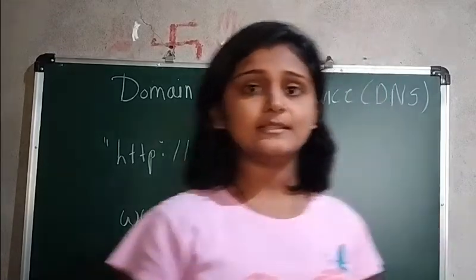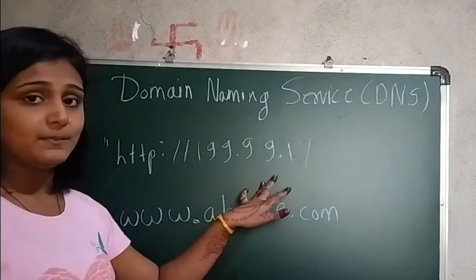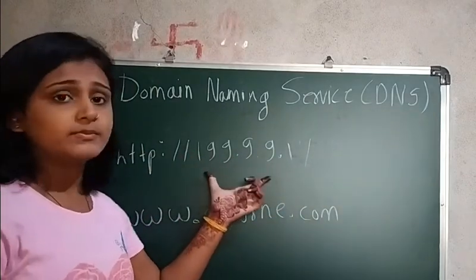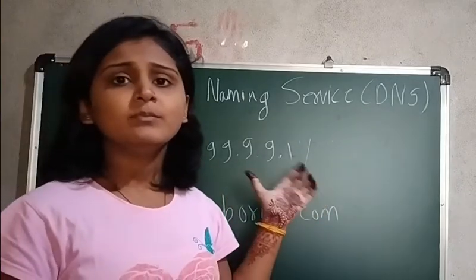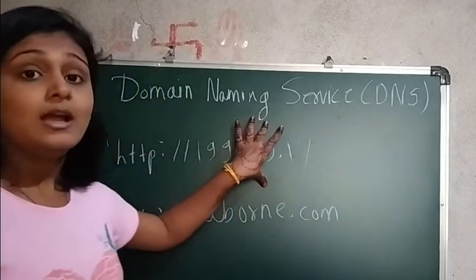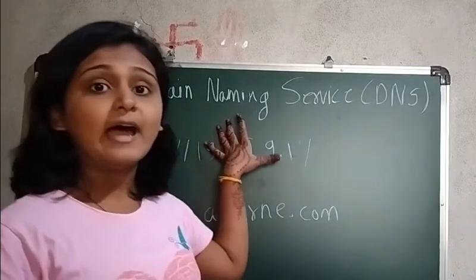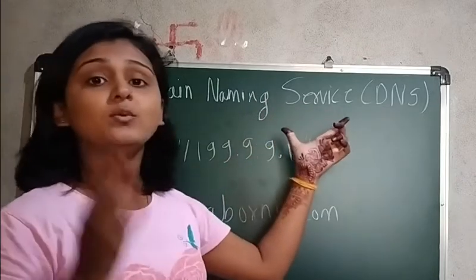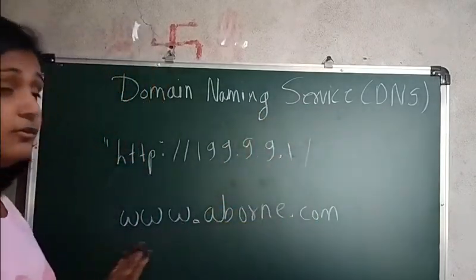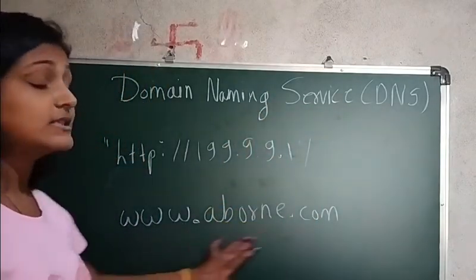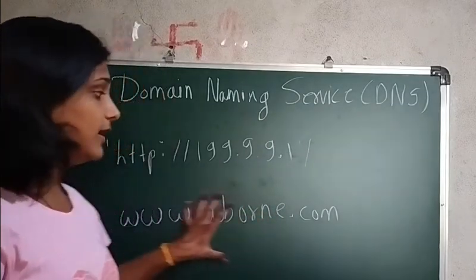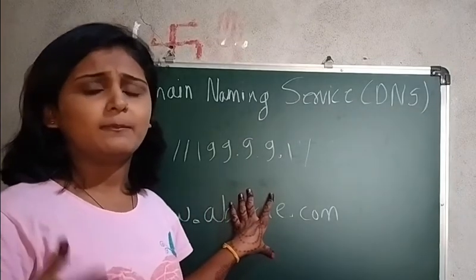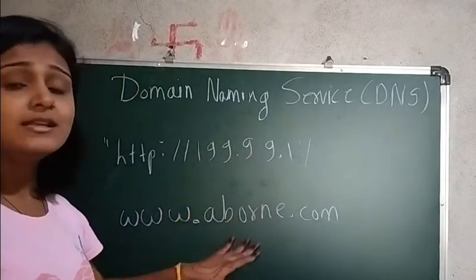If there would be a unique numeric address — for example, here you can see something like HTTP followed by a numeric address of a particular website — it would be very difficult to use that type of address. So instead of that, DNS, which is nothing but Domain Naming Services, came into existence. Nowadays we use website names like the name of a company or whatever the website is, instead of those numeric addresses.